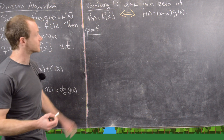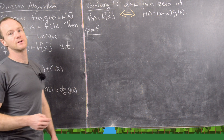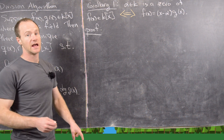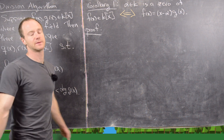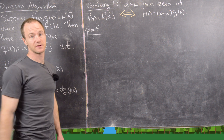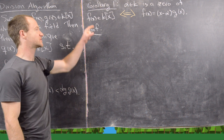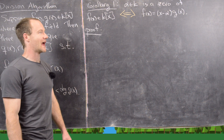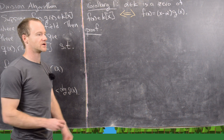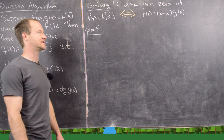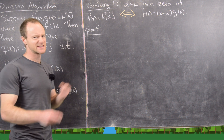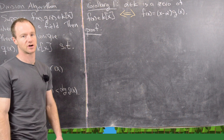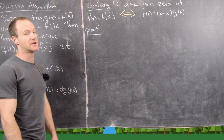Our first corollary: suppose that α is a member of the field and a zero of f(x) — that is, f(α) = 0. That is true if and only if f can be written as (x − α)·g(x), meaning (x − α) divides f(x). This is a result we always use in calculus, and this proof shows it holds over an arbitrary field.